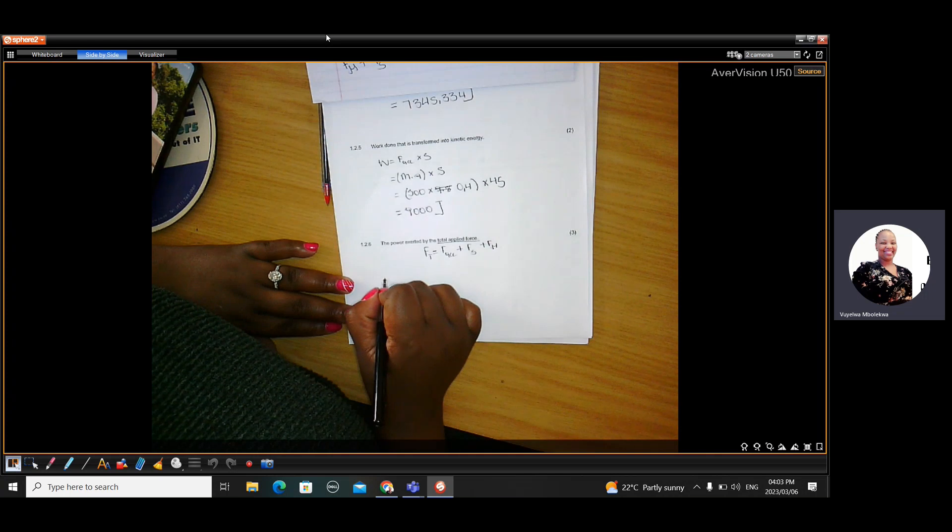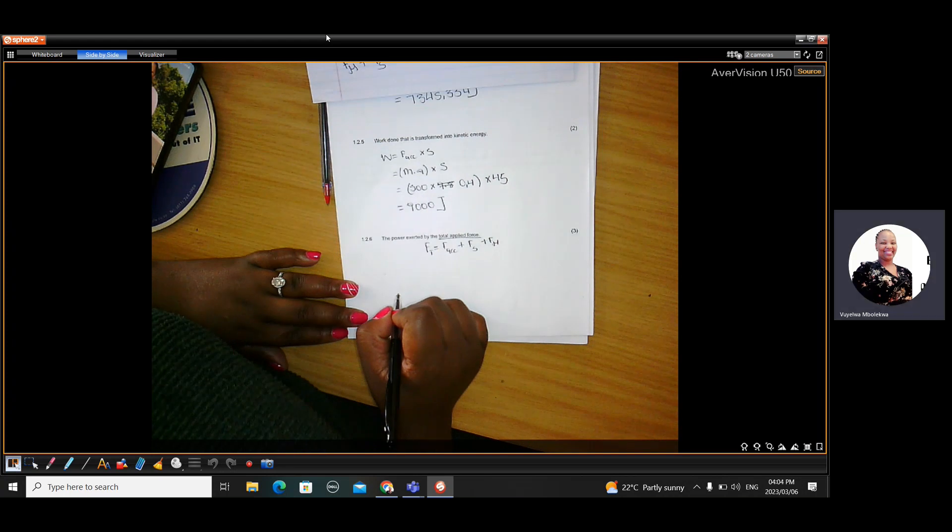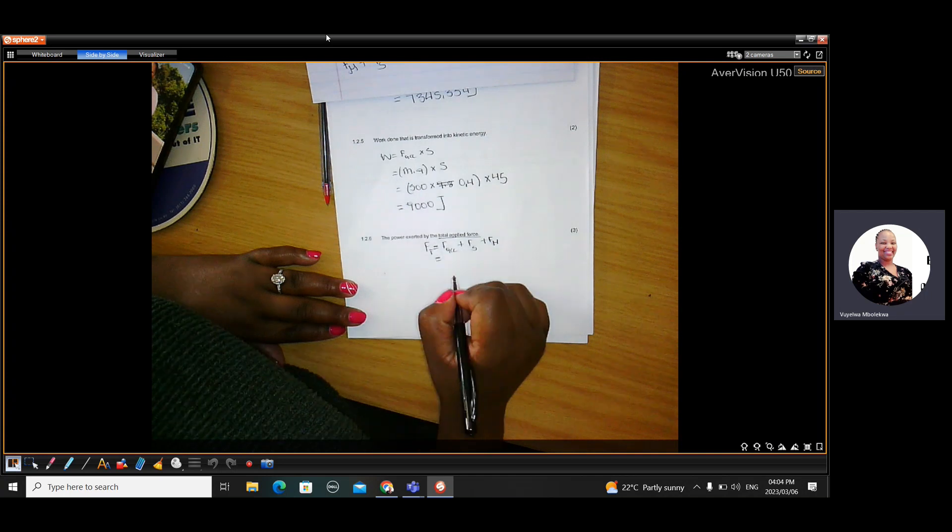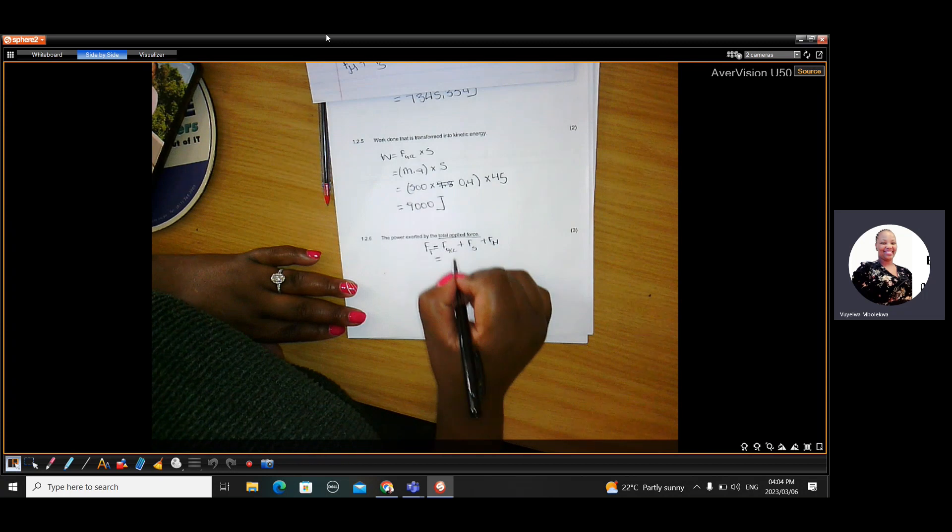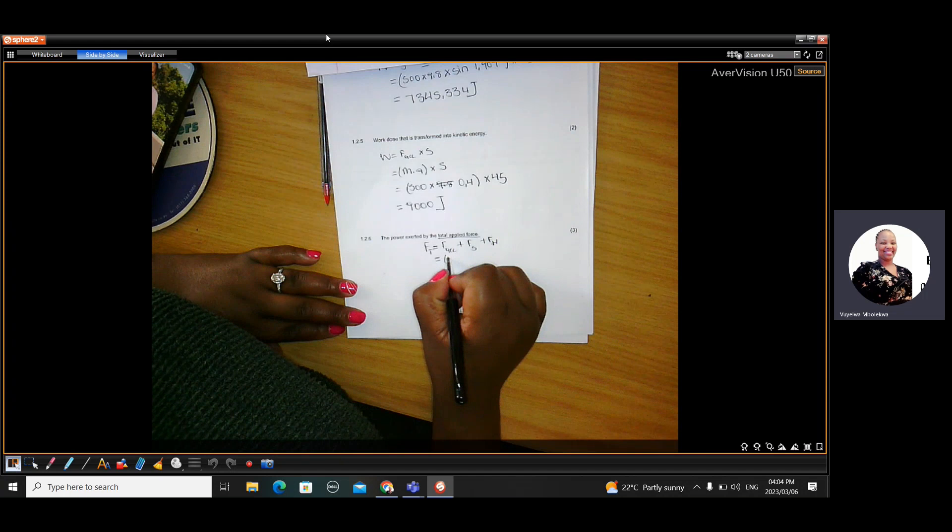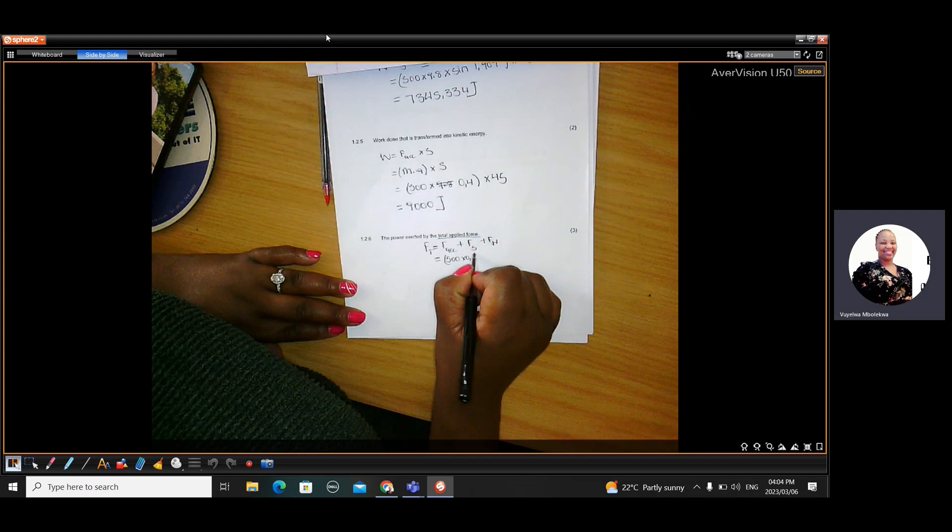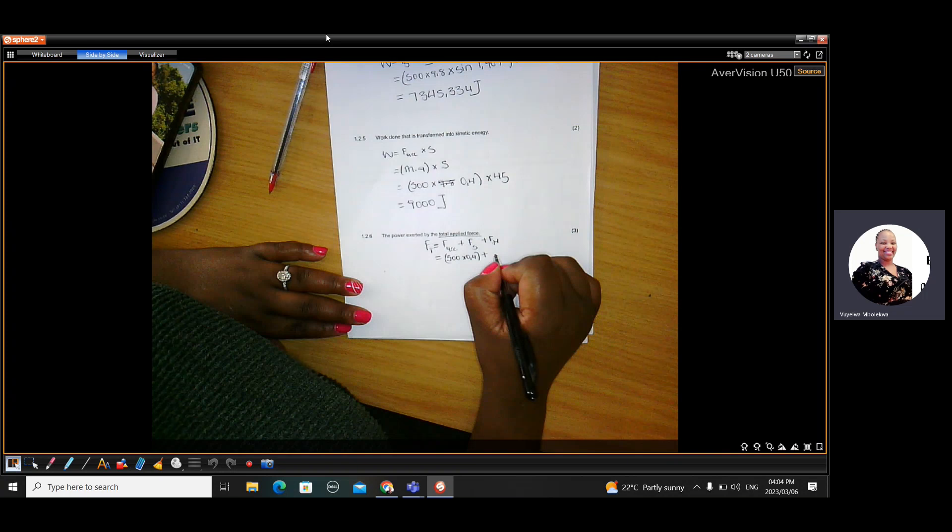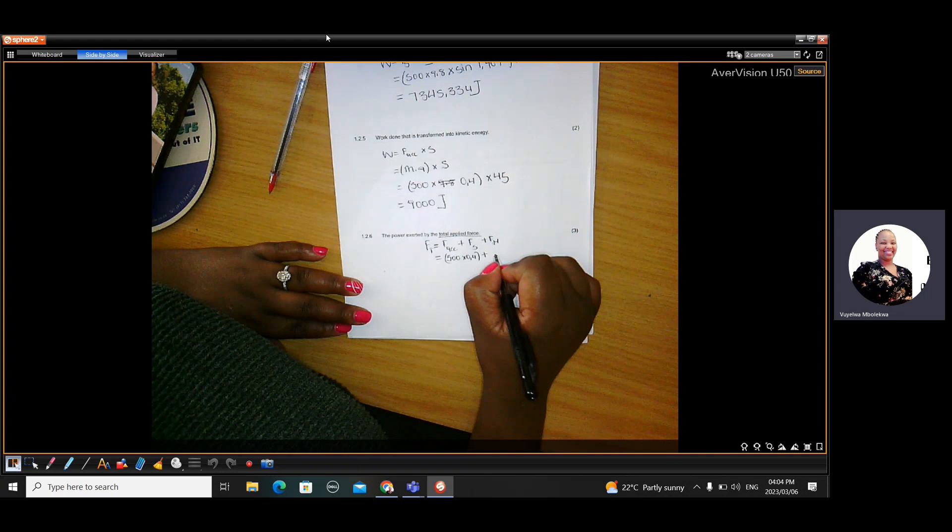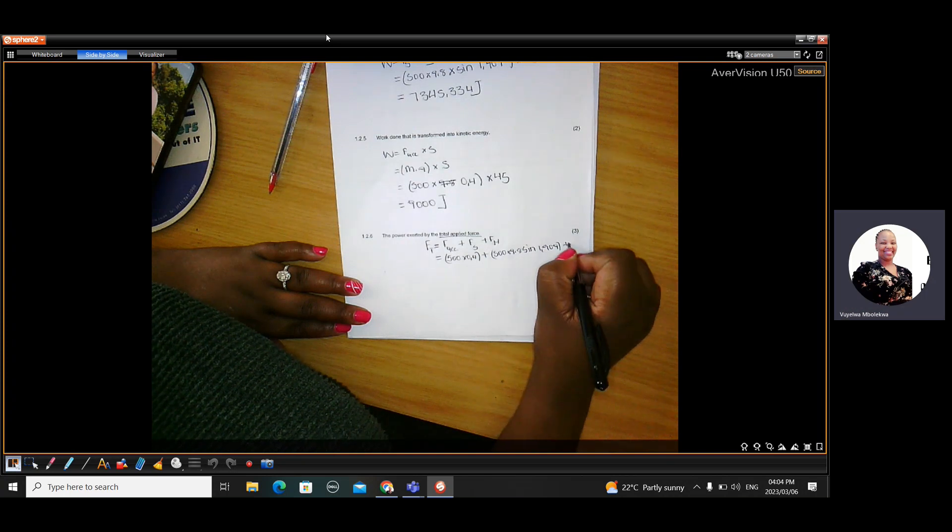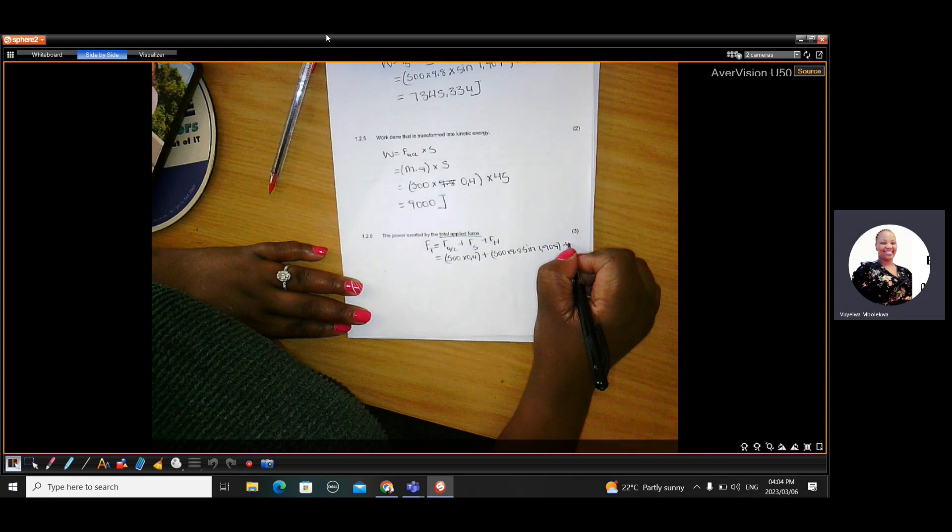Because to calculate power, you're going to say work done over time. But to get work done, you need the force because work done is force times distance. So let's start by the forces. The acceleration force, we will calculate it by saying MA, which is 500 times 0.4. The FS will be W sine theta, which is 500 times 9.8 times by sine 1.909. Then the frictional force was given, the frictional force was given is 45.